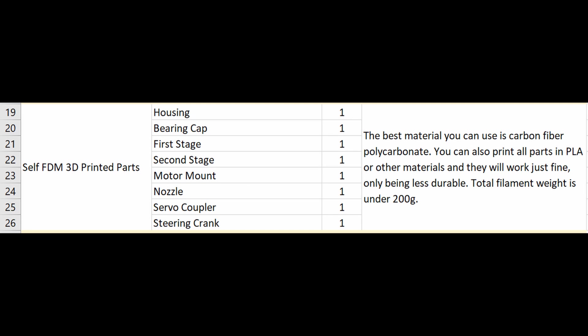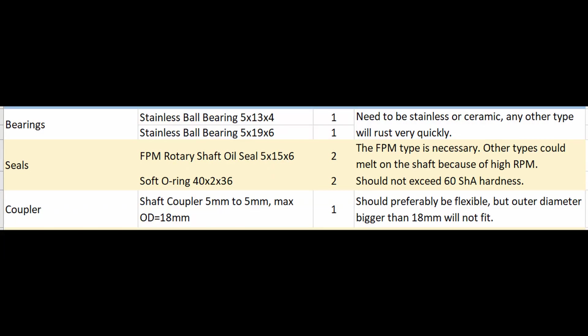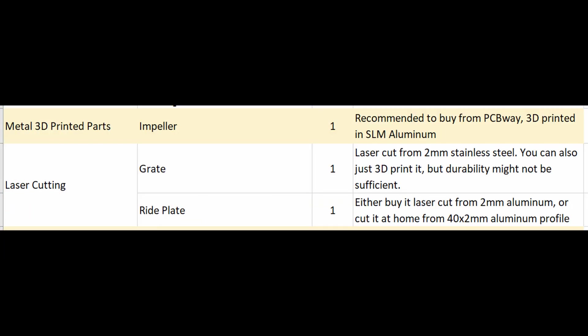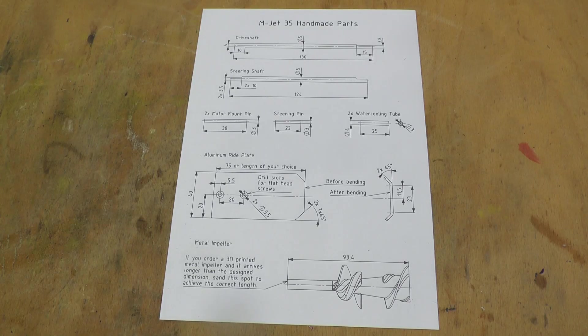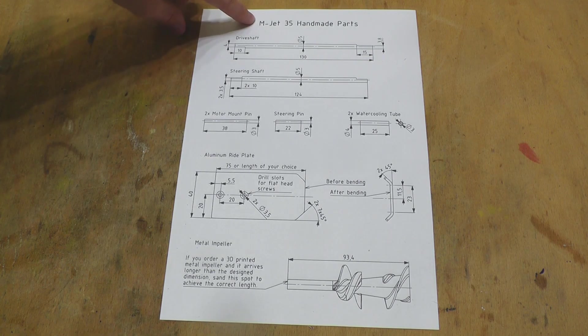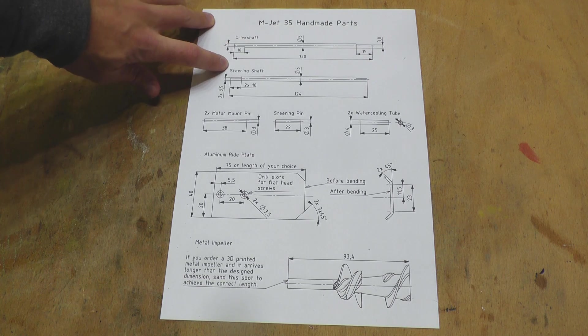The MJET 35 consists of some 3D printed parts, some fasteners, some hardware you will need to buy, some custom parts you will need to order, and some simple handmade parts. This part list is available in the description. So let's start the build. I will start by making the handmade parts, and I will do the drive shaft and the steering shaft first.